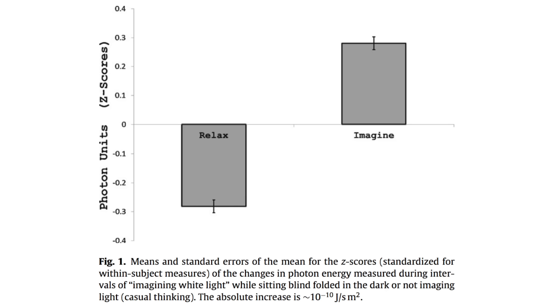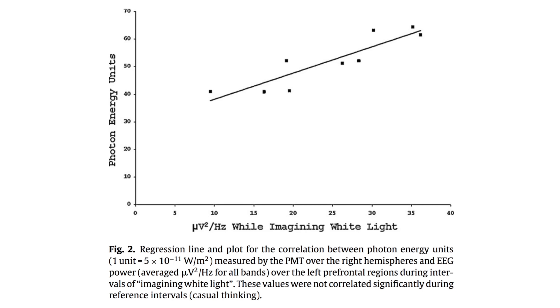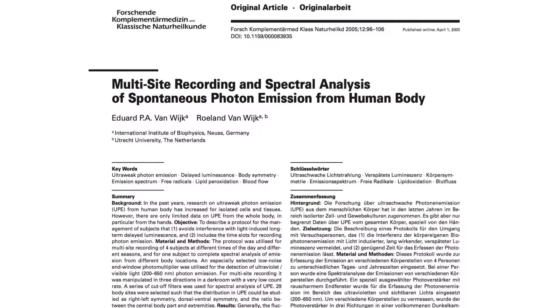Another example. Put someone in a dark room, shave off a bit of the hair on the scalp and place a photo detector against the area of the visual cortex. Take a baseline reading. Ask the person to imagine a bright light. The photon count will immediately shoot up. Your brain gives off more light when you imagine light.